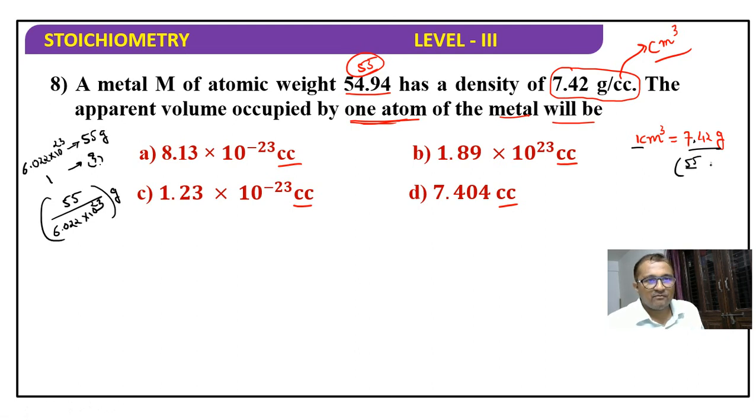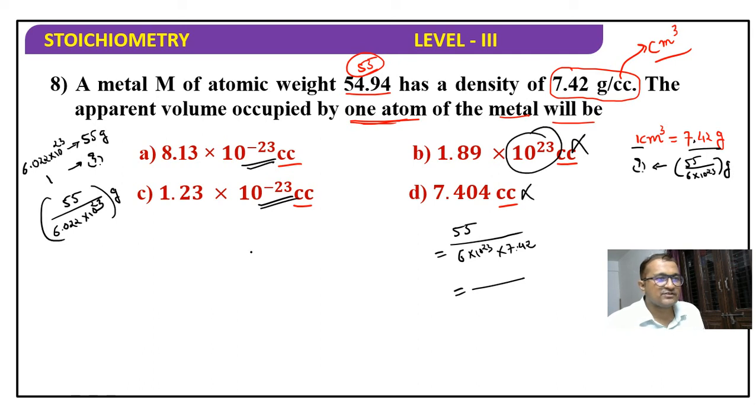Now reverse calculation: 7.42 grams means its volume is 1, so if we take mass of 55 by 6 into 10 raise to 23, then its volume will be our answer. So 55 divided by 6 into 10 raise to 23 goes in the numerator, 7.42 in the denominator. The answer will be 10 raise to minus 23 with one point something. Let's check - 10 raise to minus 23 options, this is plus 23 which is not possible. So fourth option is our answer.